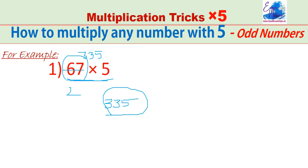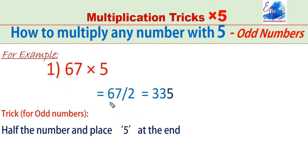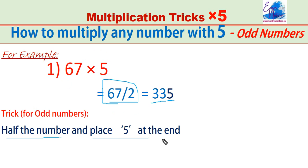For odd numbers, first take the half of the given number — ignoring the remainder — that is 33, and put 5 at the end. For even numbers keep 0 at the end; for odd numbers keep 5 at the end. That is the difference.